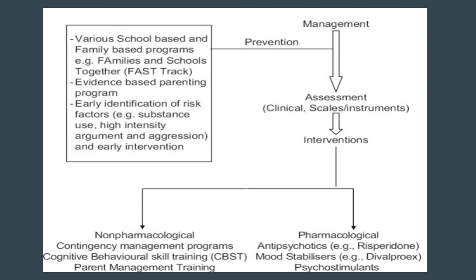Next we will see the assessment and management. For assessment, the various scales that can be used are the Overt Aggression Scale, Child Behavior Checklist, and the Iowa Aggression Scale. In India, we use the Child Psychopathology Measurement Schedule (CPMS), which is a semi-structured interview containing a list of around 75 symptoms. There is a designated section for conduct disorder which gives a damage score, with good reliability, sensitivity, and specificity of 87 percent respectively.